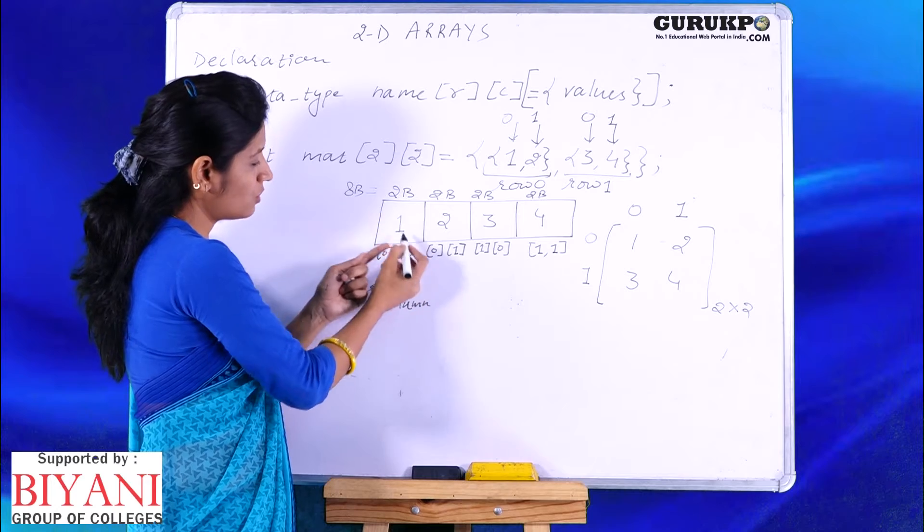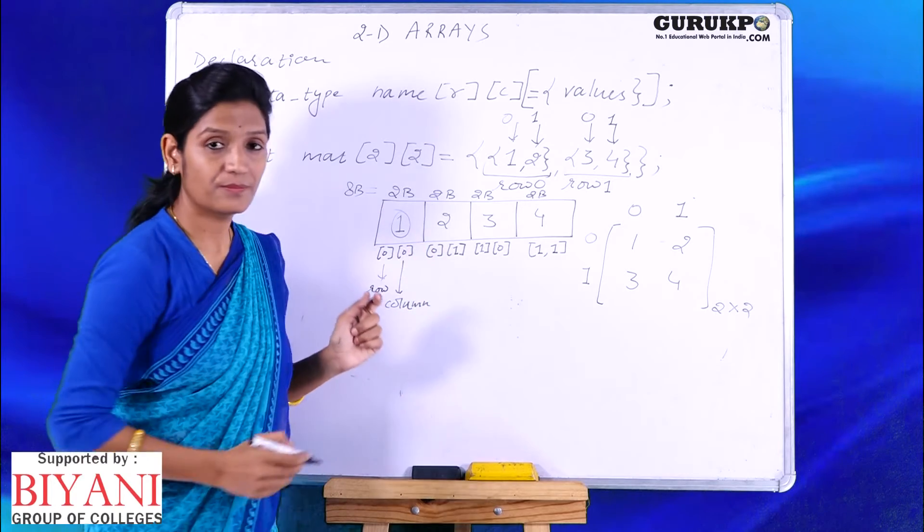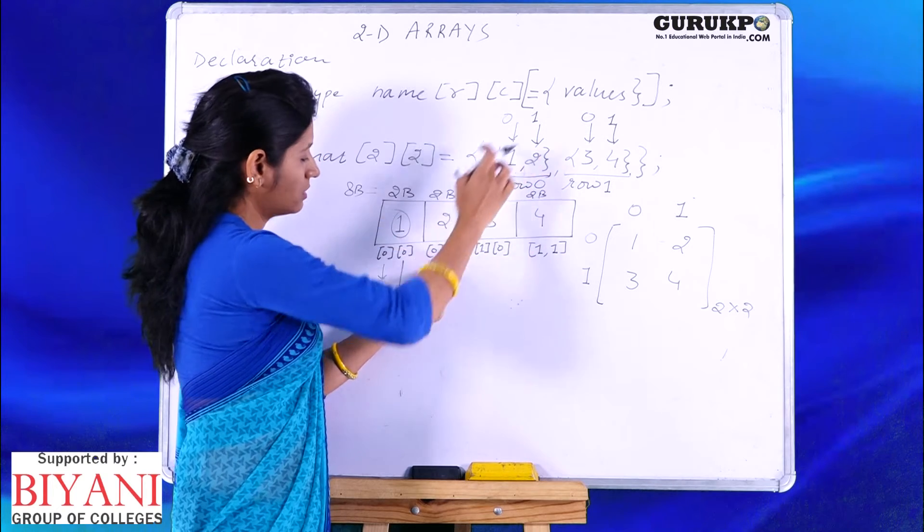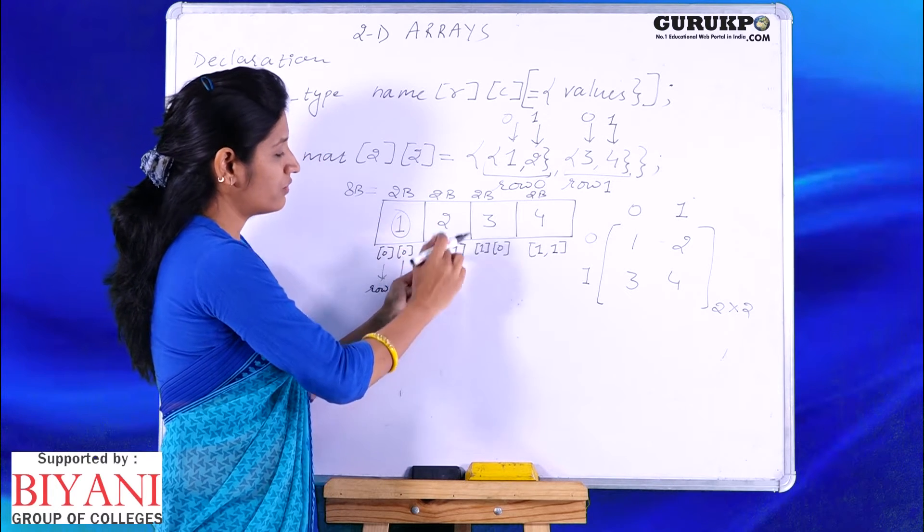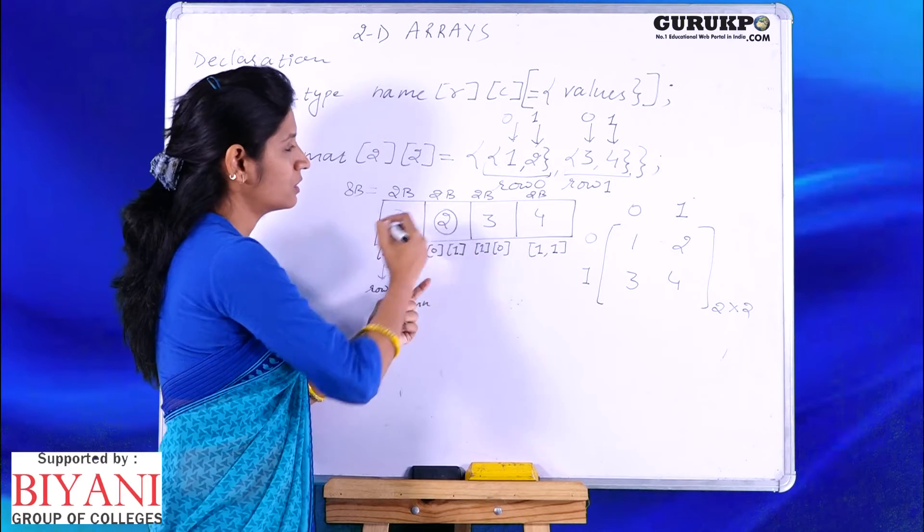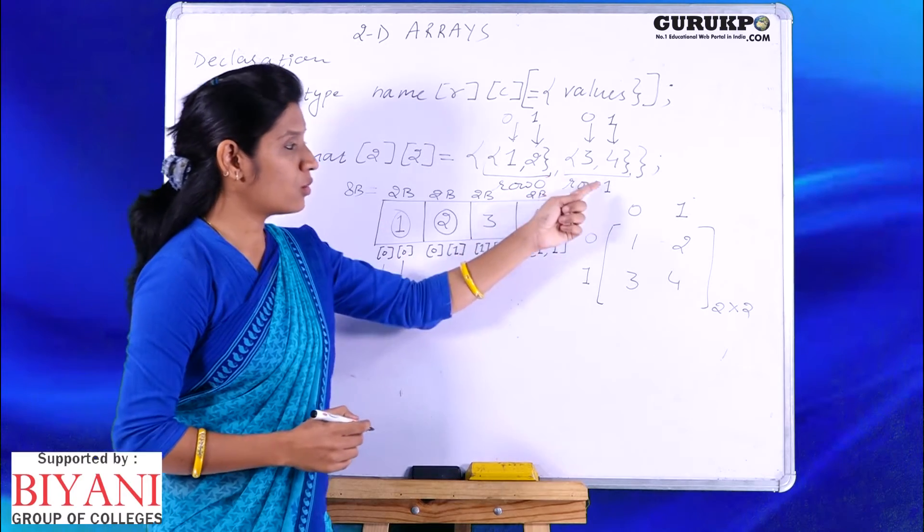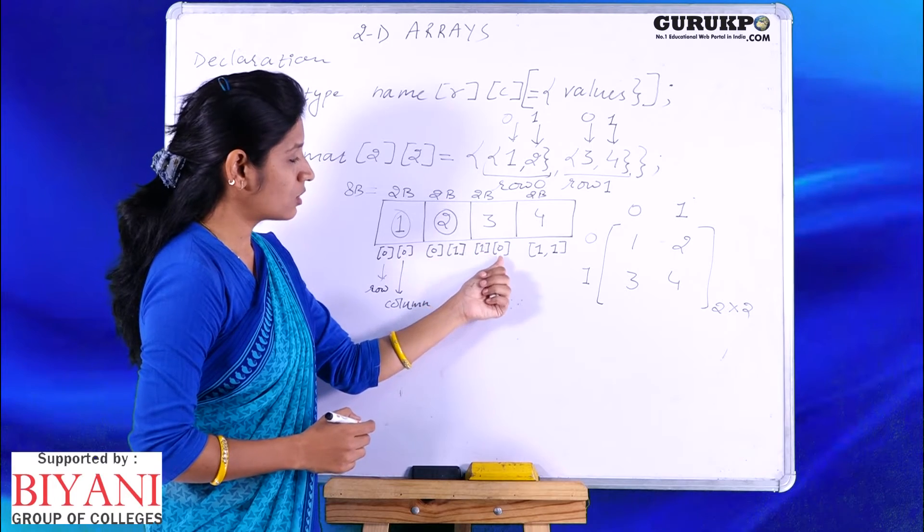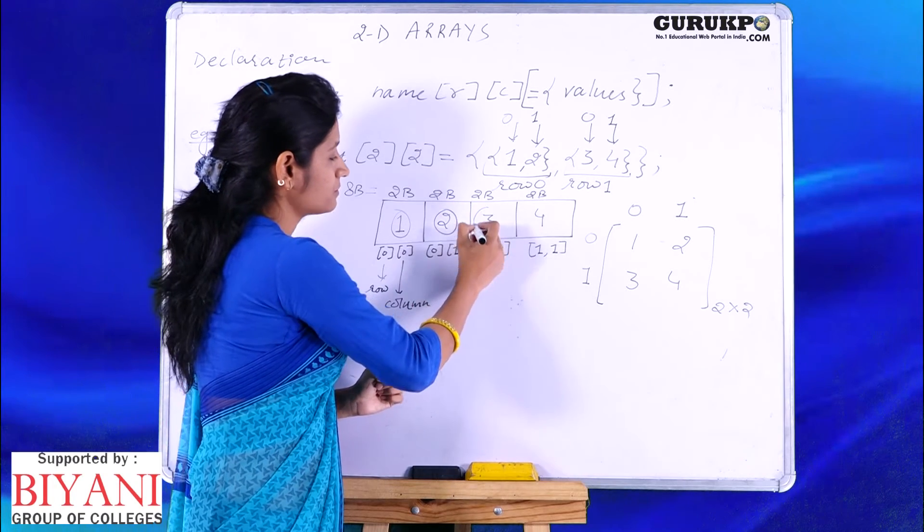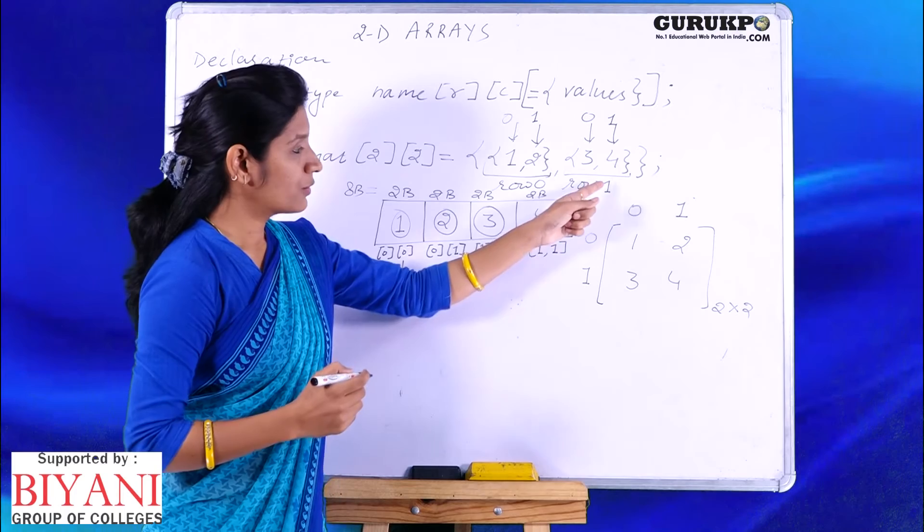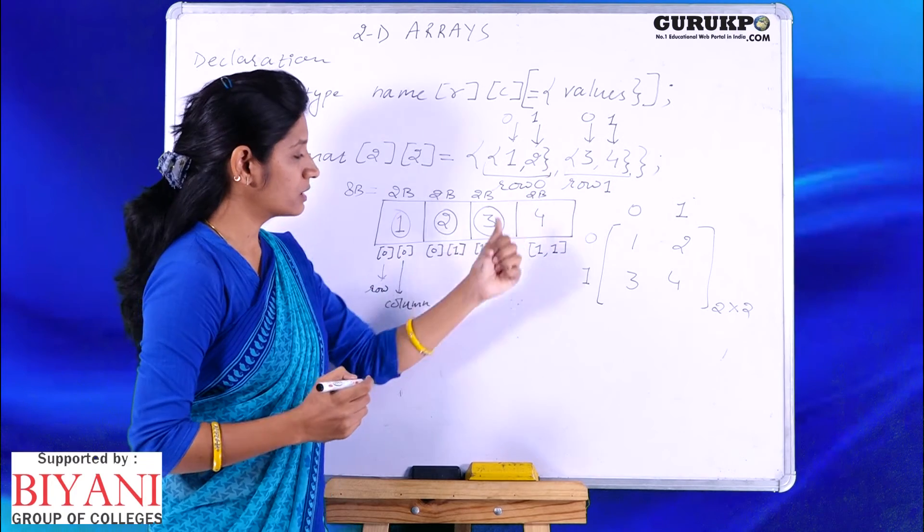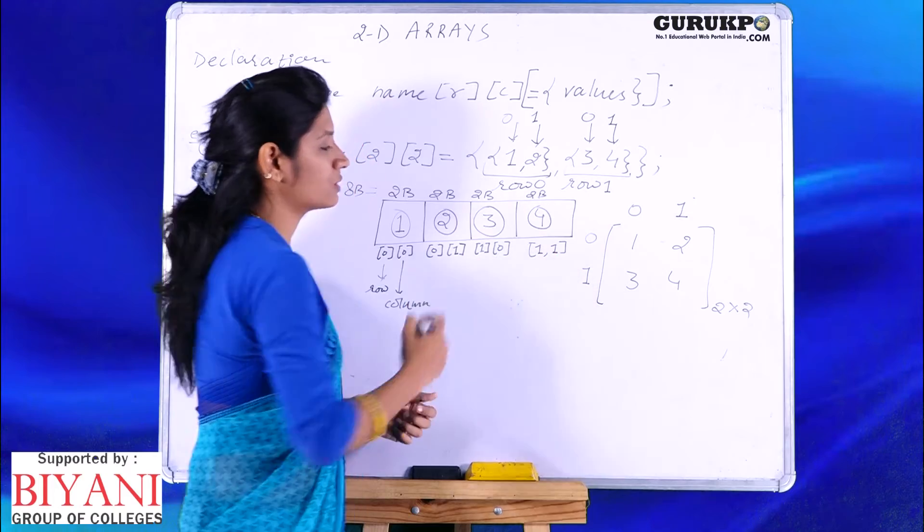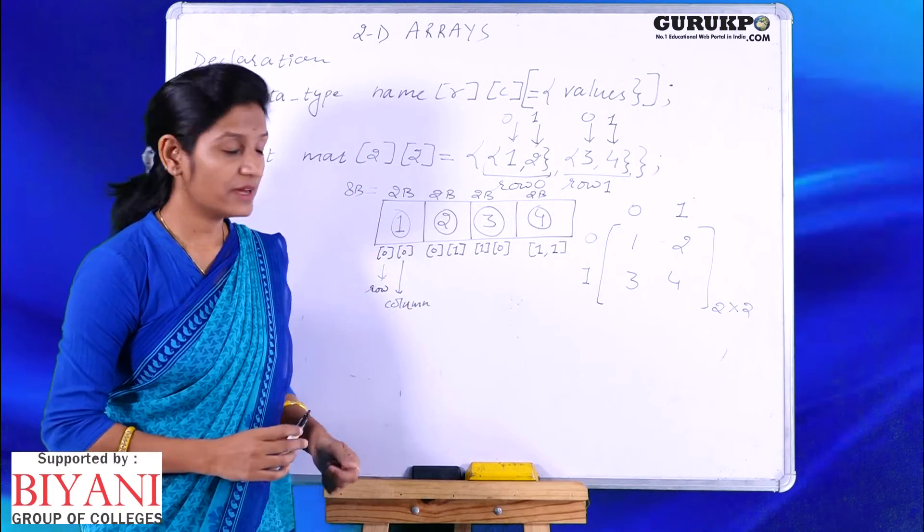Row 0 column 0, 1, row 0 column 1 that is 2, row 1 column 0, row 1 column 0 is 3, row 1 column 1, row 1 column 1 that is 4.